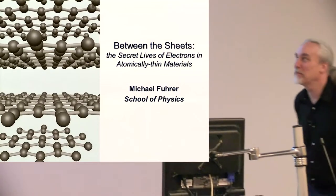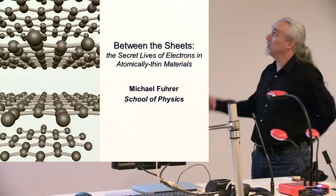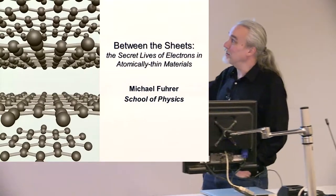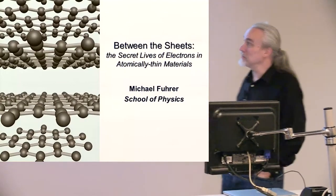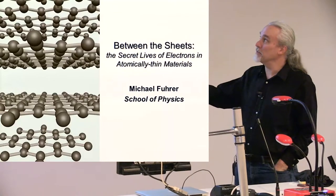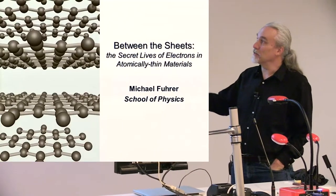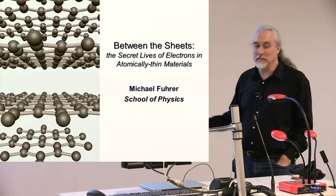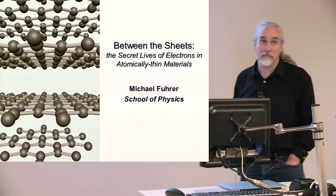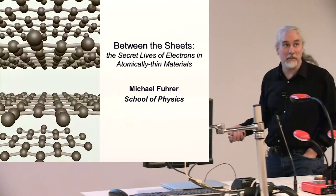Thanks very much. So the title here, Between the Sheets, refers to this structure here which is the atomic structure of graphite. So graphite comes in sheets of carbon that are strongly bonded. And these days physicists can study just one of these sheets which we call graphene and that's the material I'm going to try to tell you about today.